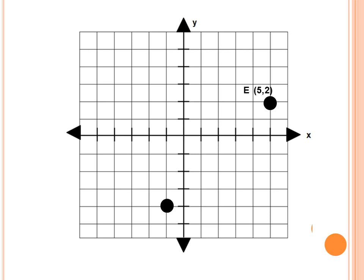Let's try: can you find the coordinates of point G? I will give you 10 seconds. If your answer is (negative 1, negative 4), that is correct. That means you understood how to get the coordinates using the given point.